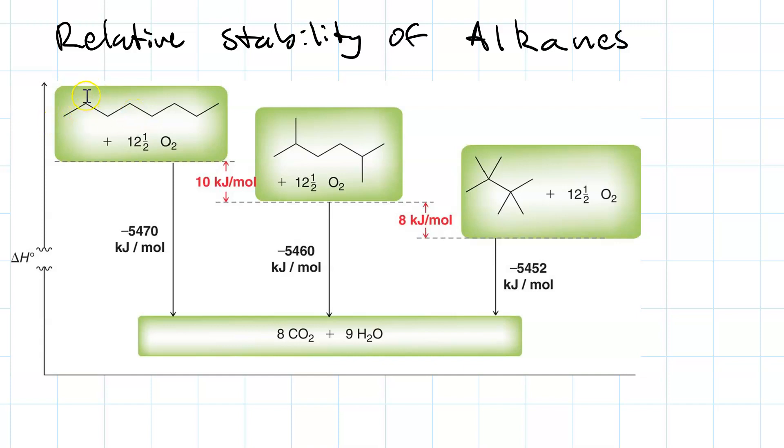One, two, three, four, five, six, seven, eight. So this is just octane. This is 2,5-dimethylhexane. And this is 2,2,3,3-tetramethylbutane. All of them are C8H18.